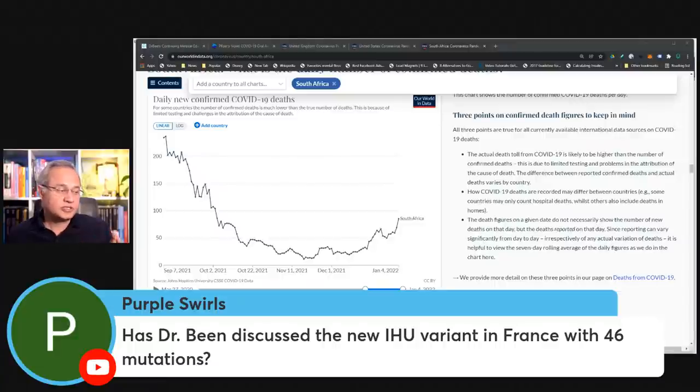So purple swirl says, has Dr. Bean discussed the new IHU variant in France with 46 mutations? I have not, but it is not really new. It was actually before Omicron. It has these mutations. It is not faster than Omicron. It was actually not even faster than Delta. The interesting thing is it is found in a traveler now as well. It was known to WHO and others beforehand, but it was not a variant of concern. So it got news media, some cycles and some clicks, but generally that virus itself has been observed for some time. And Omicron is faster than that. That means IHU will find it difficult to take over Omicron, but we'll see.